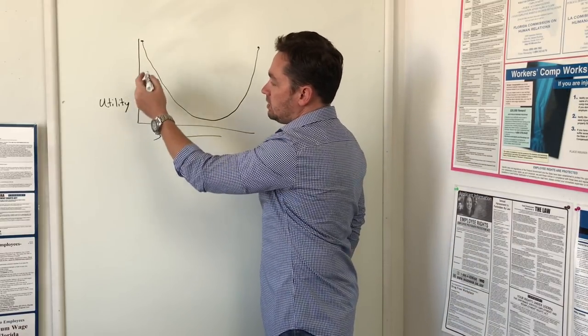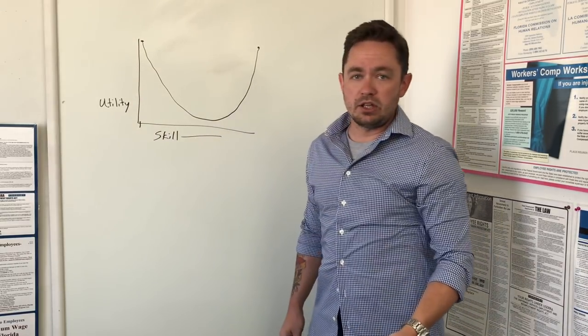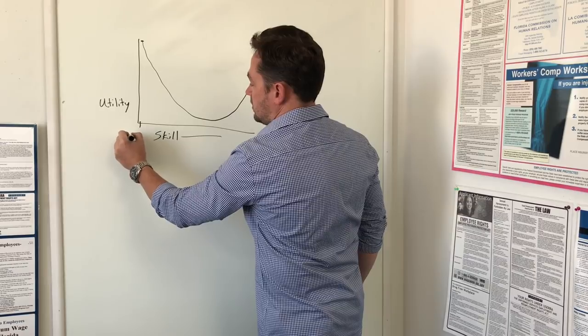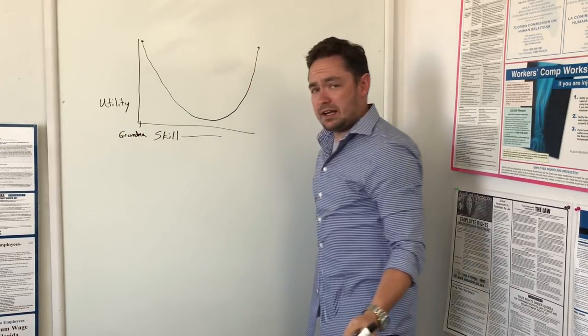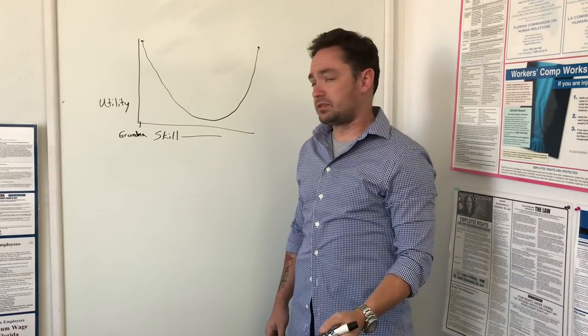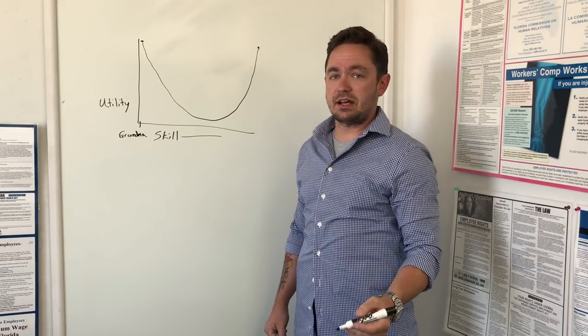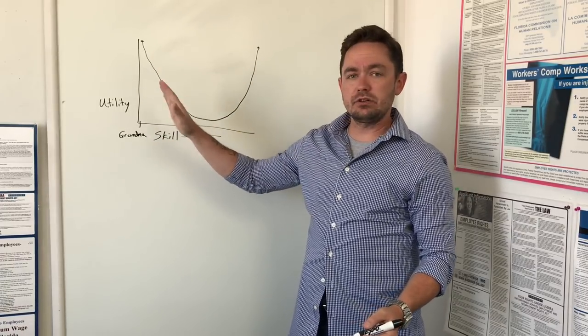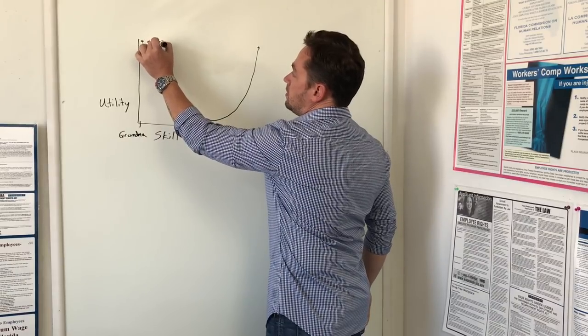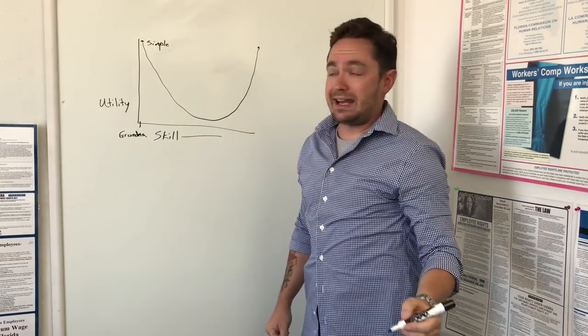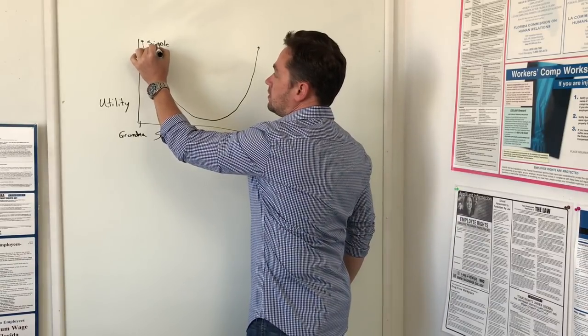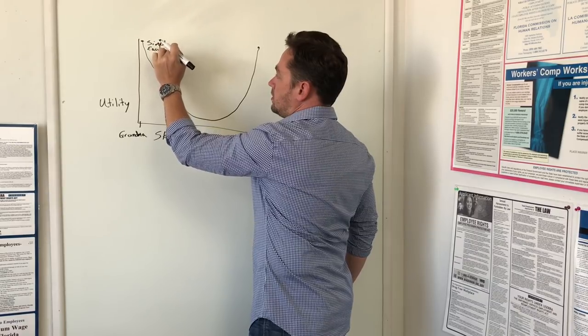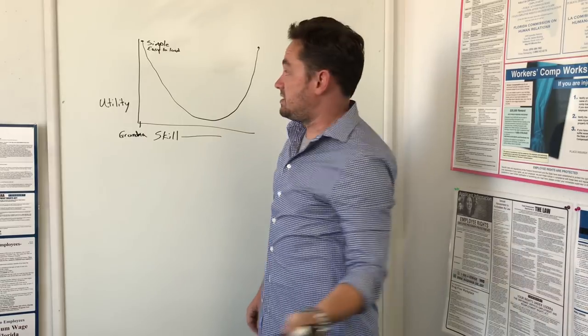Over here at the little to no skill end of the board, you have first-time gun owners. This is the grandma who buys a J-frame or another small revolver because she needs a gun for personal protection. At this end of the utility curve, revolvers are very, very useful because they're simple. They're easy to load.